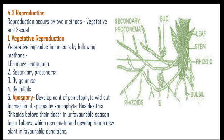The fifth type of vegetative reproduction is apospory — the development of a gametophyte without formation of spores by a sporophyte. Besides this, rhizoids, before death during unfavorable seasons, form tubers which germinate and develop into new plants under favorable conditions.